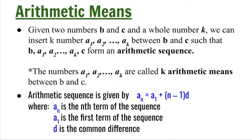Given two numbers b and c and a whole number k, we can insert k numbers a1, a2, all the way to ak between b and c, such that b, a1, a2, and so on up to ak and c form an arithmetic sequence. The numbers a1, a2, up to ak are called k arithmetic means between b and c.